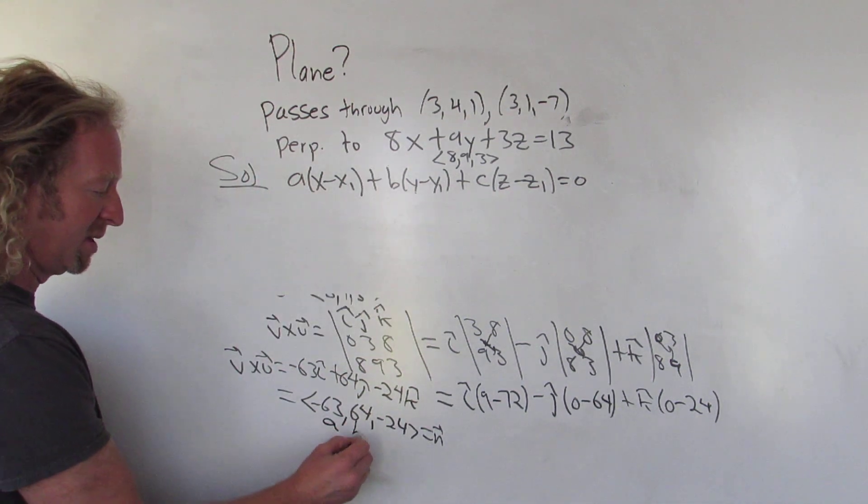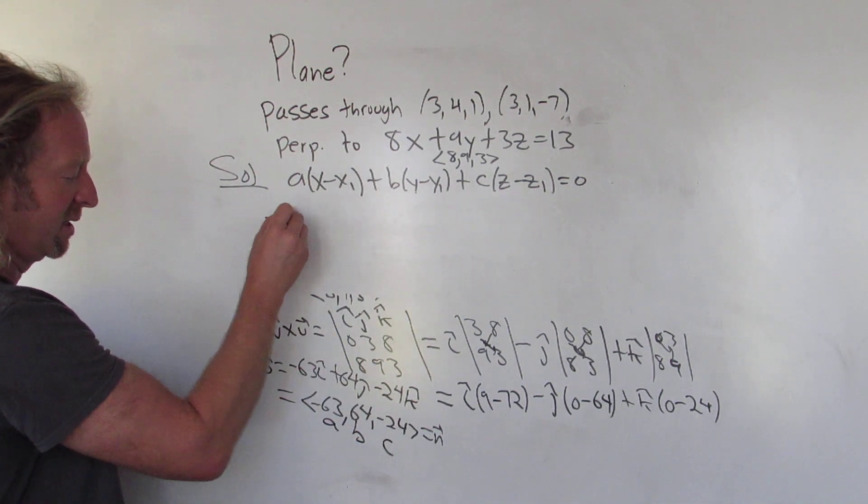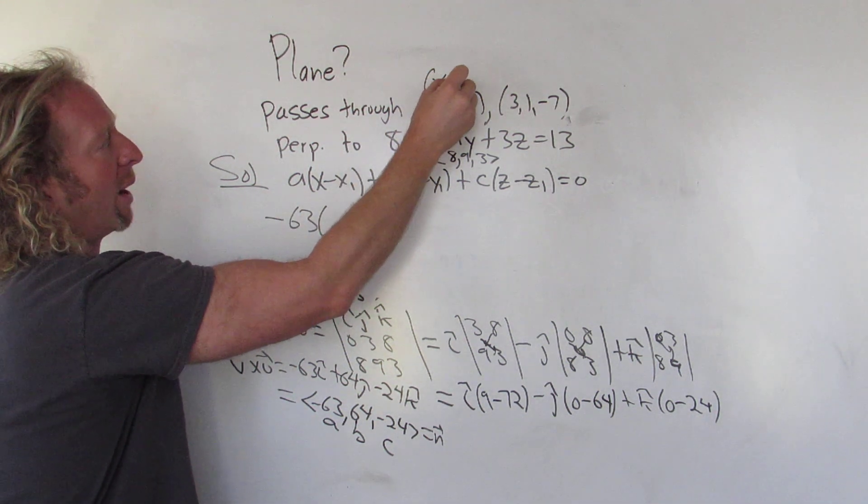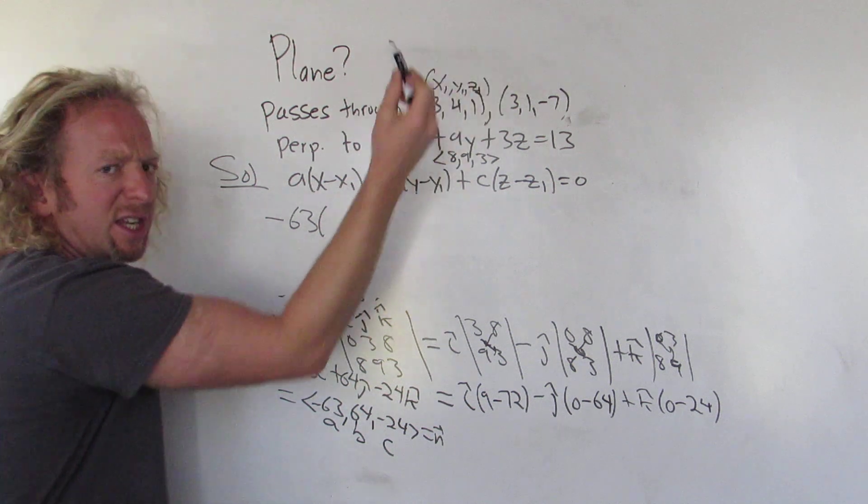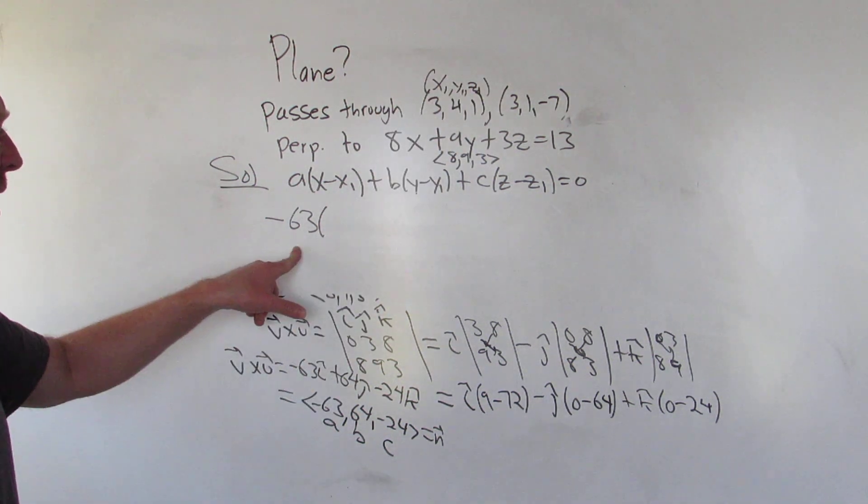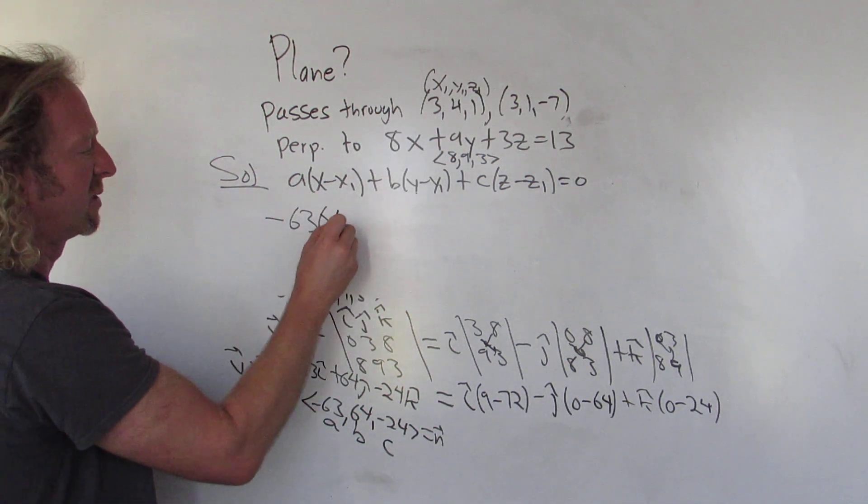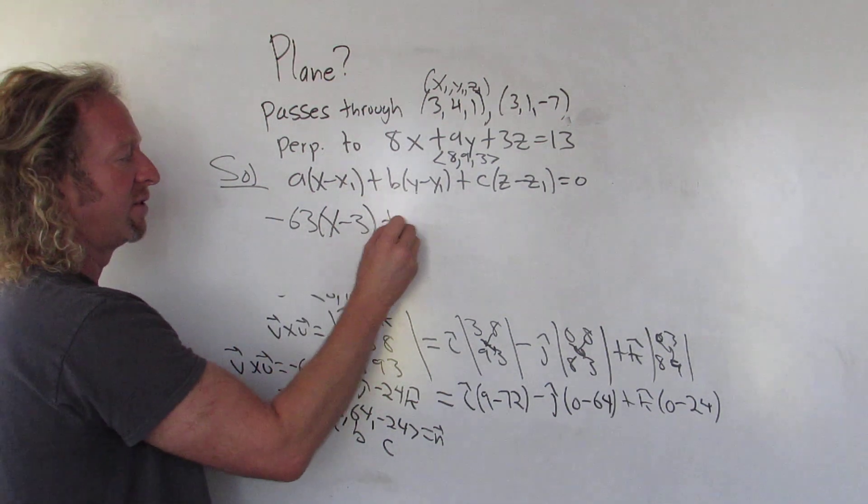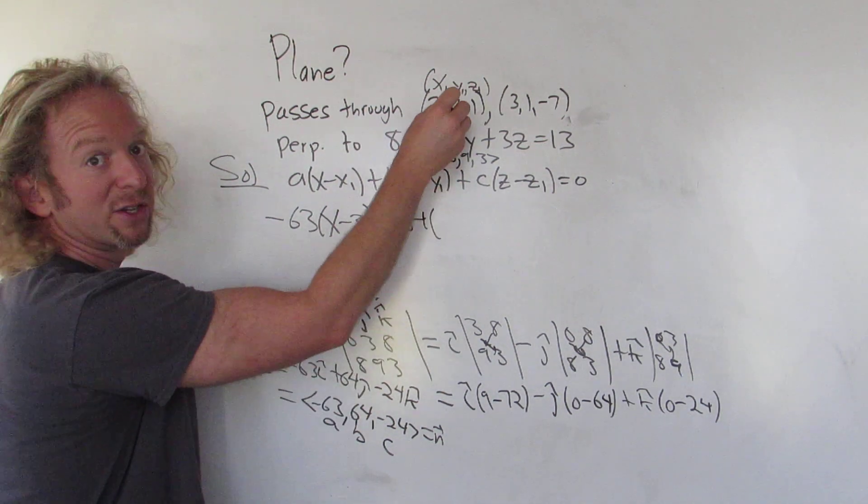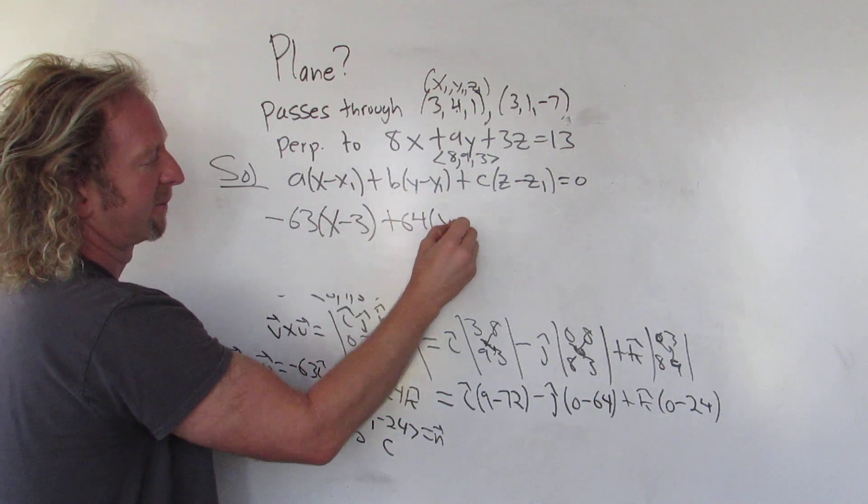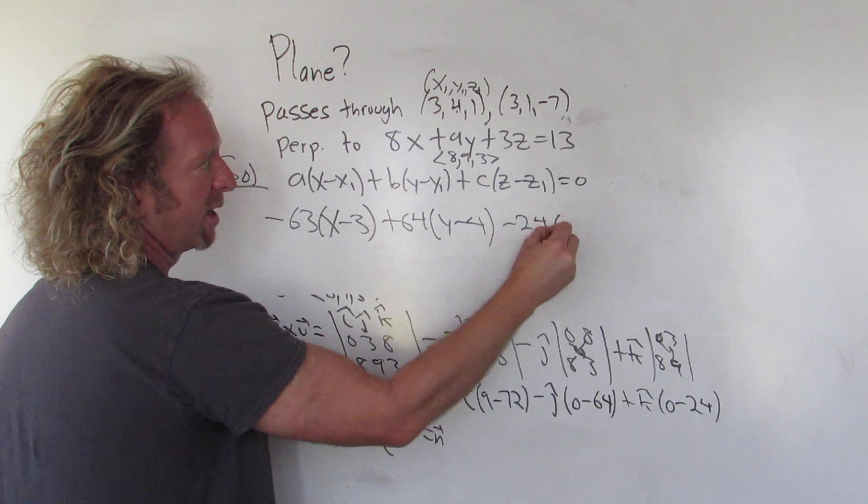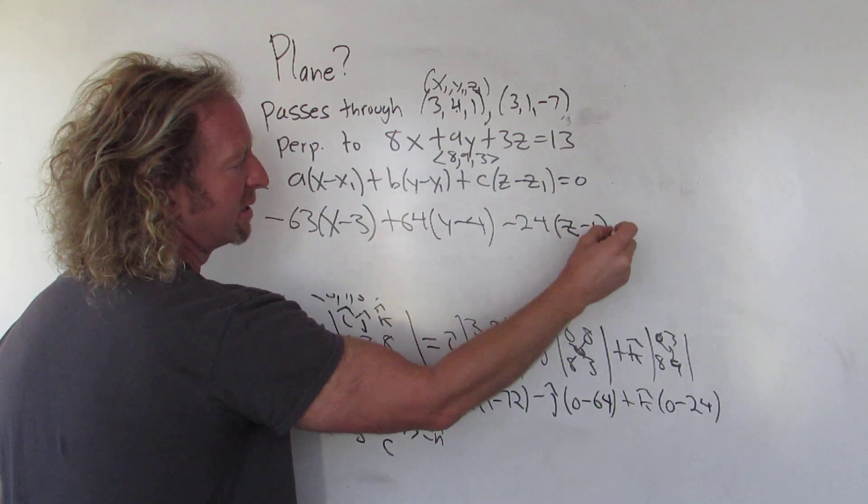And so this is our a, this is our b, this is our c. So it will be negative 63, and then let's use this point here. X1, Y1, Z1. You can use any of these, you get the same answer. So x minus 3, and then b is 64, so plus 64, that will be y minus 4. And then c is negative 24, so negative 24, and then z minus 1, and then it's equal to 0.